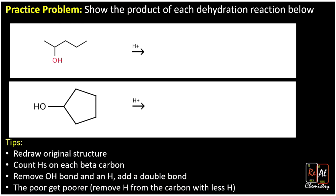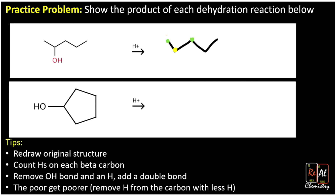Let's practice. For the first problem, we redraw the structure with the OH, then count hydrogens on each beta carbon. The alpha carbon is identified, and the beta carbons have three hydrogens on the end and two hydrogens in the middle. The side with fewer hydrogens is on the right, so we remove one hydrogen from there, remove the OH, and form the double bond in the middle of the molecule — a common outcome with Zaitsev's rule.